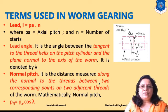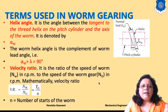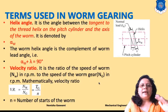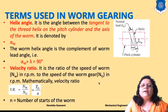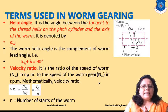The helix angle is the angle between the tangent to the thread helix on the pitch cylinder and the axis of the worm. It is denoted by α_w. The worm helix angle is the complement of the worm lead angle, so: lead angle + helix angle = 90°. Lead angle and helix angle are complementary to each other.